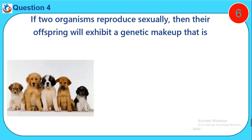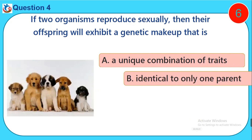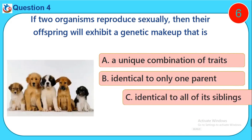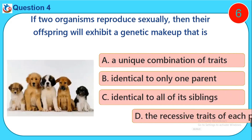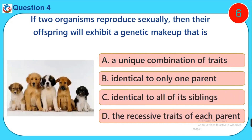Question four: If two organisms reproduce sexually, then their offspring will exhibit a genetic make-up that is: A) A unique combination of traits, B) Identical to only one parent, C) Identical to all of each siblings, D) The recessive traits of each parent.